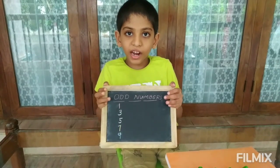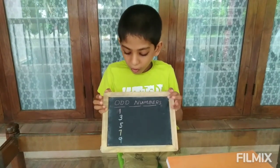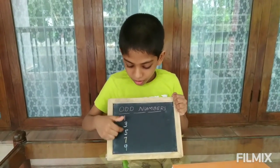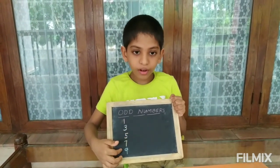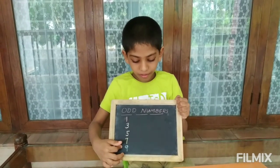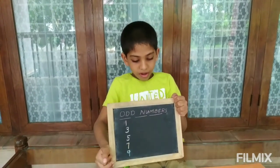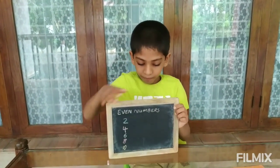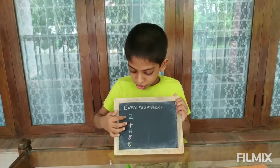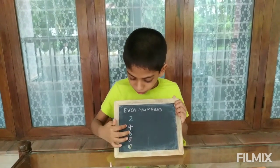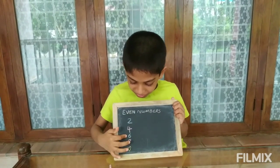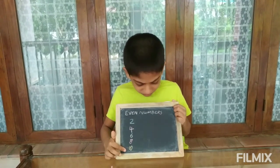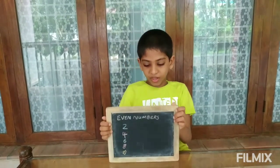These are the odd numbers: one, three, five, seven, nine. These are the even numbers: two, four, six, eight, ten.